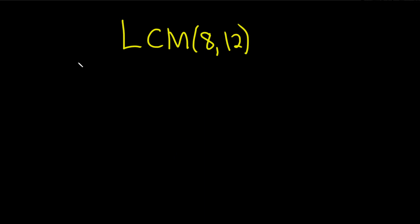So let's start with 8. 8 is really just 4 times 2, and then 4 is 2 times 2. Then you bring down the 2, and so you see the prime factorization of 8 is 2 cubed. So 8 equals 2 cubed.